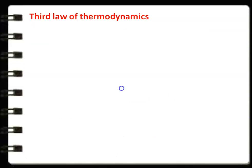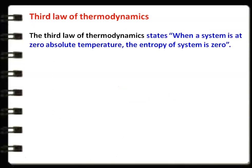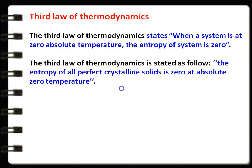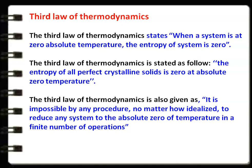The third law of thermodynamics states: when a system is at absolute zero temperature, the entropy of the system is zero. Another statement: the entropy of all perfect crystalline solids is zero at absolute zero temperature. A third statement: it is impossible by any procedure, no matter how idealized, to reduce any system to absolute zero temperature in a finite number of operations.